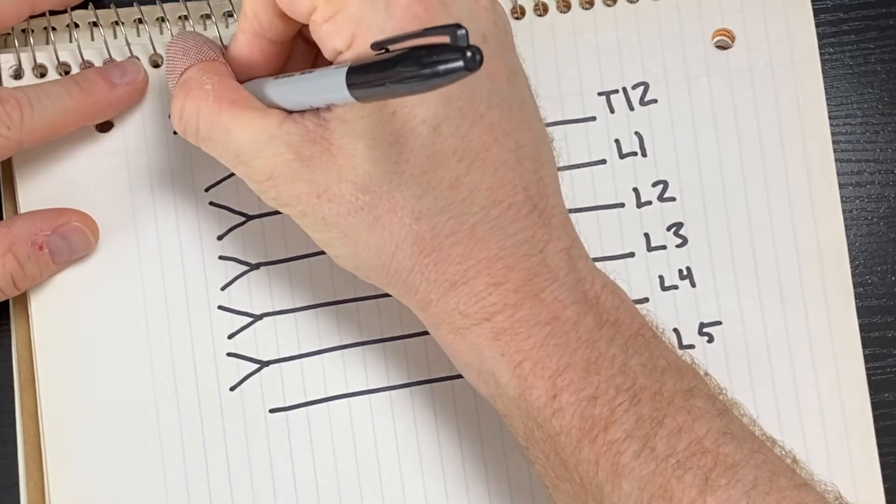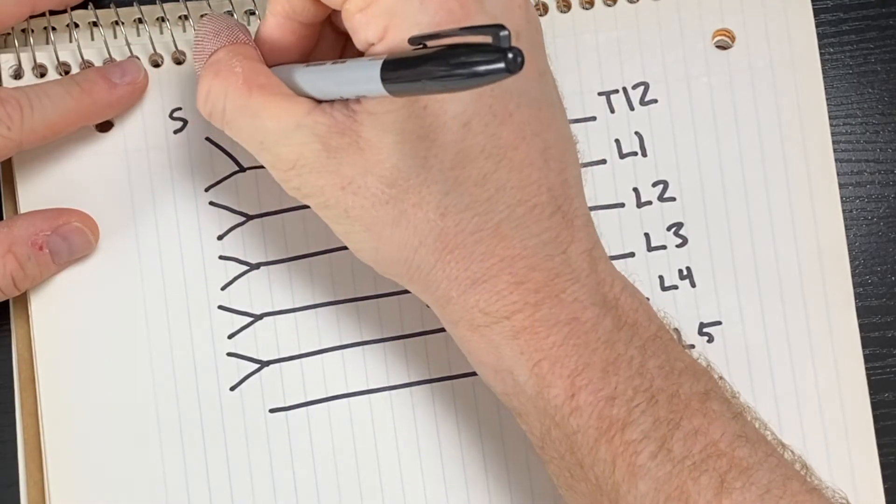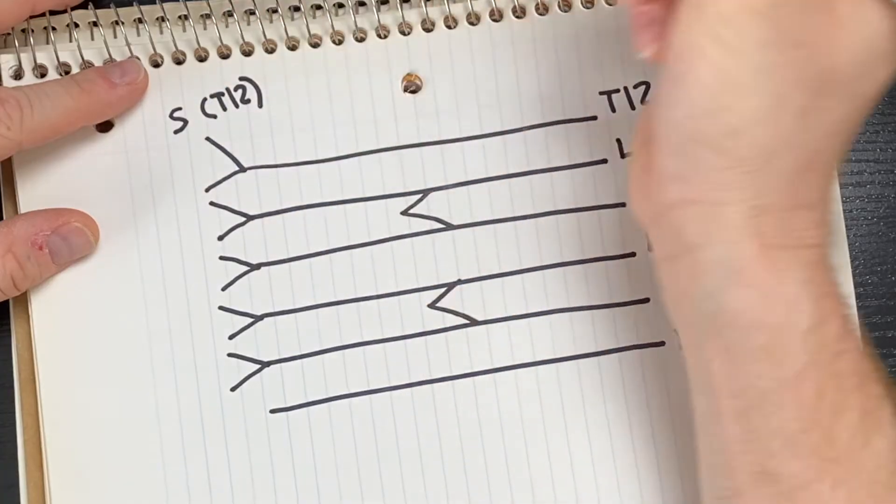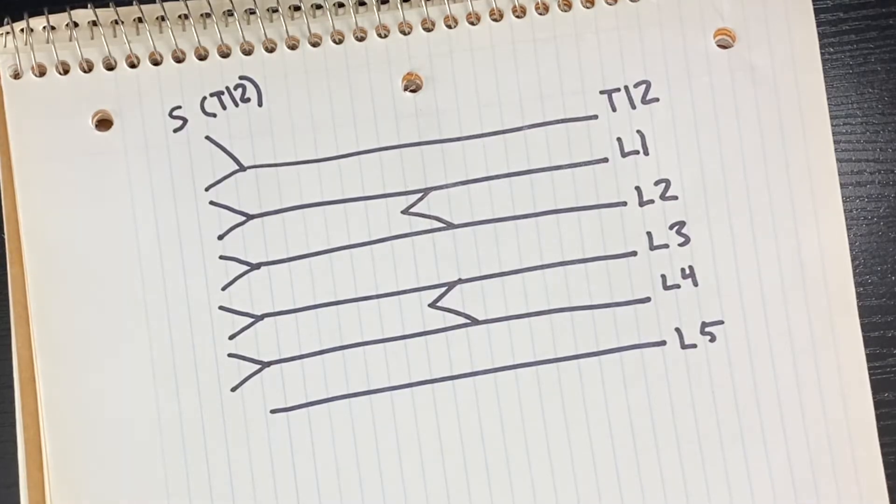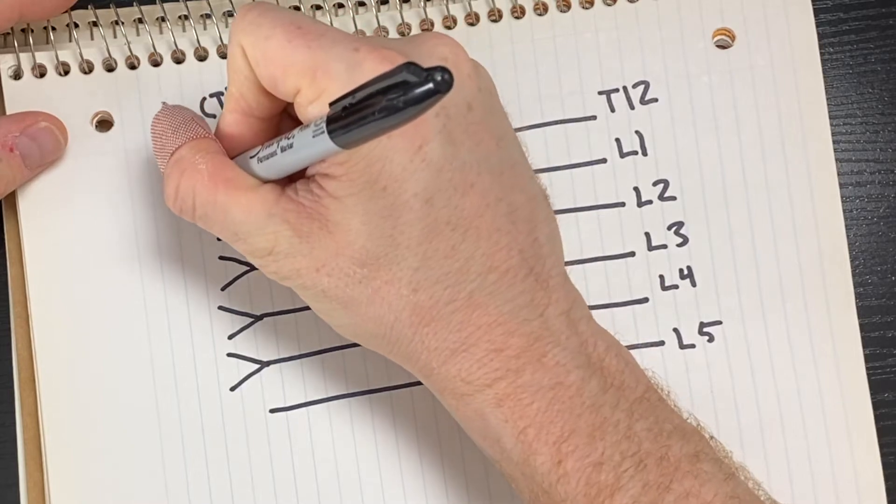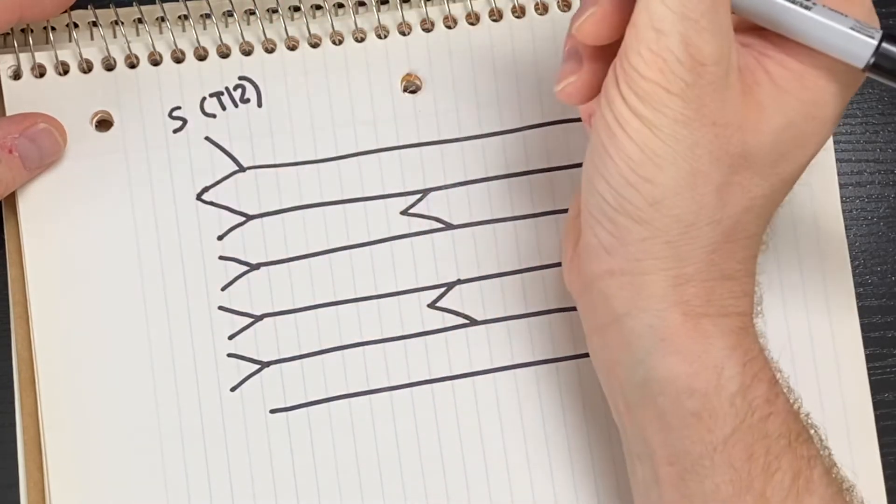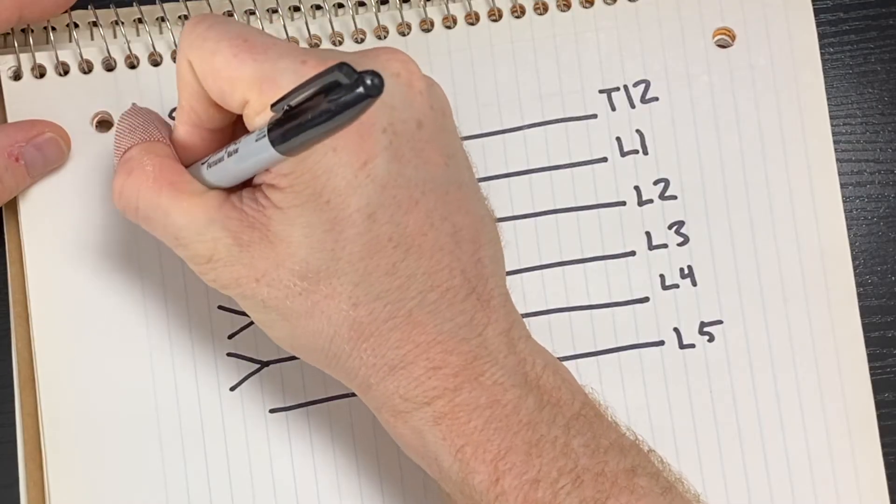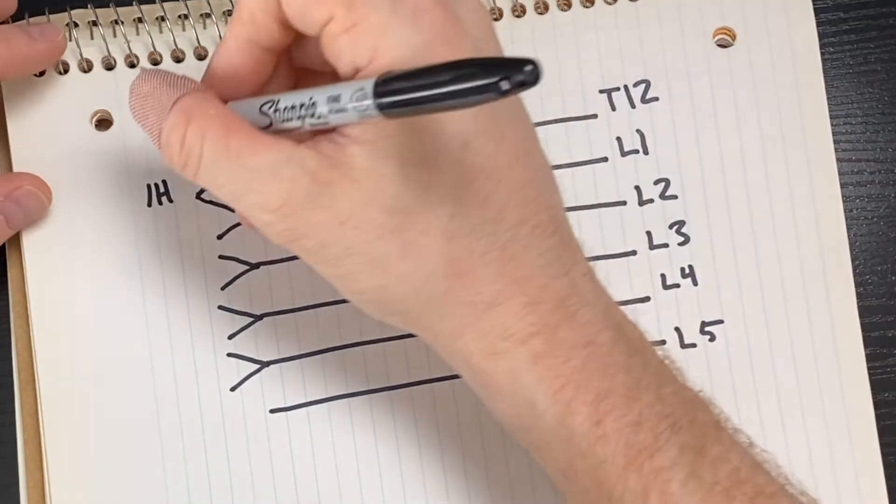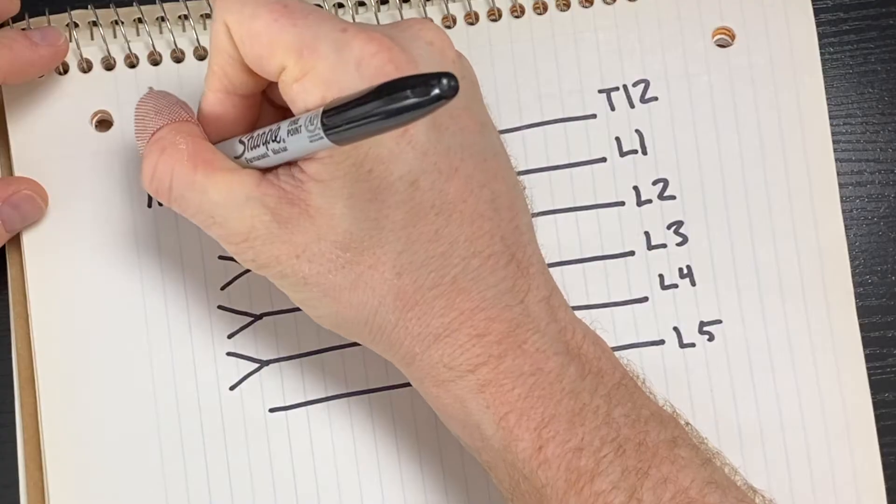The first nerve is the subcostal nerve and it's up here, and in parentheses we know that it is just T12. Moving on down, we're going to join the elements of T12 and L1 together. And here you're going to get your iliohypogastric nerve, and this one is going to have T12 and L1, so we'll go ahead and put that in parentheses next to it.